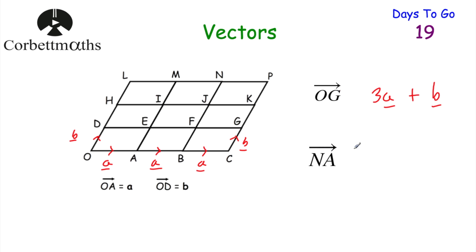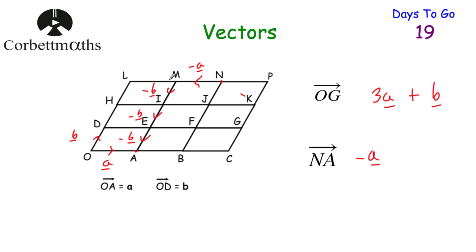Can you find the vector NA? To get from N to A, we go back 1 to the left — that's minus a. Then we go down three steps — going down is the opposite of going up, so each step down is minus b, giving minus 3b. So the vector NA equals minus a minus 3b. Well done if you got that.